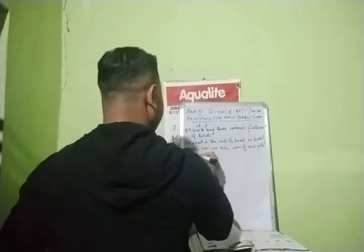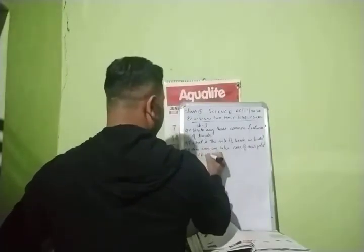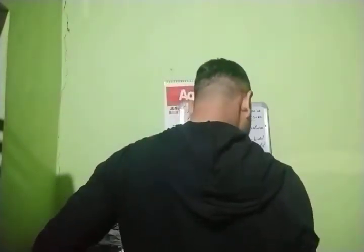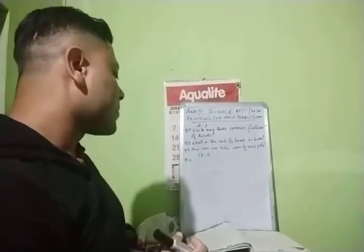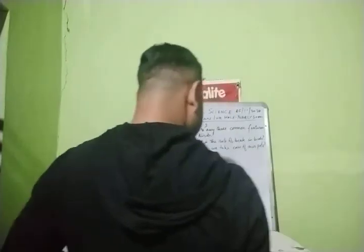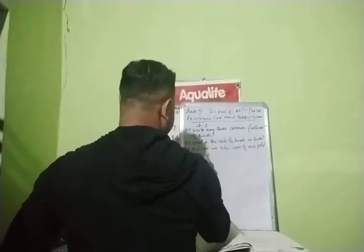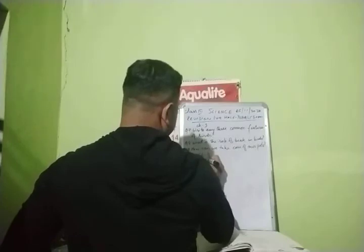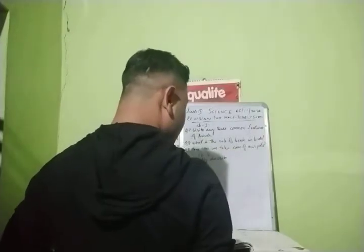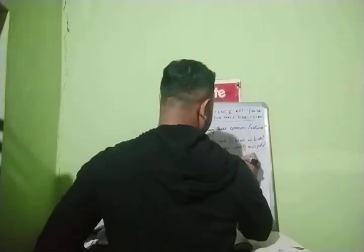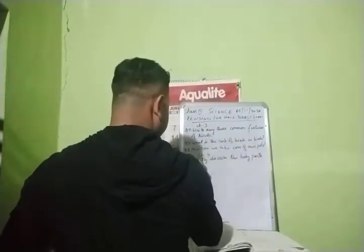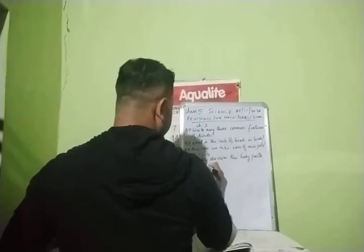Now we will do chapter number 4. Question number 10: Briefly describe the body parts of an insect.